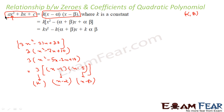So I have written Ax² + Bx + C as k(x − α)(x − β), where k is a constant and alpha and beta are the zeros of the polynomial. Now the same thing I can write in this form: k(x² − (α + β)x + αβ).